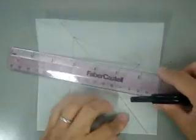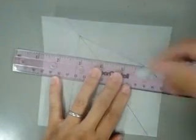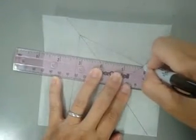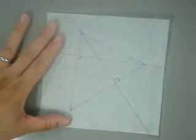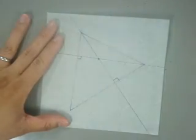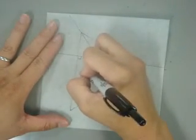Mark that altitude. Indicate that it's an altitude using a perpendicular symbol. The point of intersection of those two altitudes is the orthocenter.